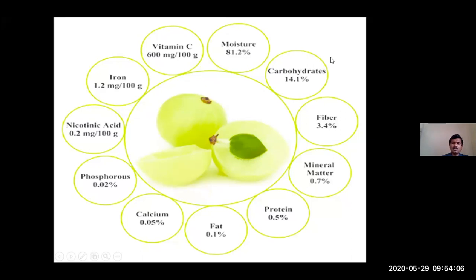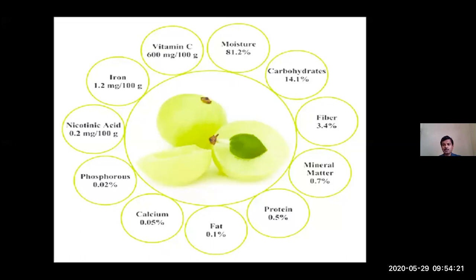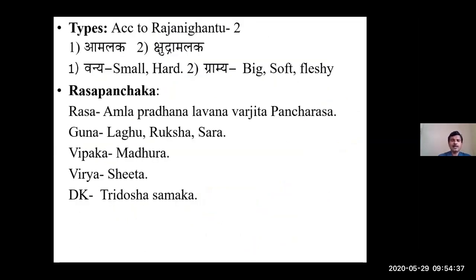Phosphorus is 0.02 mg, calcium 0.05 percent. It also contains fat, protein, mineral matter, fiber, and carbohydrates. Amalaki is a pancharasatmaka - that is lavanavarjita pancharasa. An ekarasa drug is daurbalya karaka, whereas a sadrasatmaka ahara nourishes all body parts and is good for maintaining health.